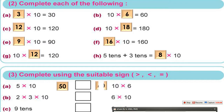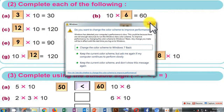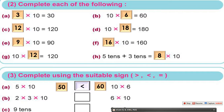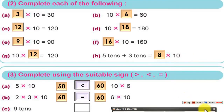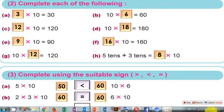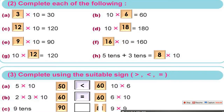10 times 6 equals 60. 10 times 5 equals 50. So 50 is less than 60, because 5 tenths is less than 6 tenths — 5 is less than 6. What about 2 times 3 times 10? 2 times 3 equals 6, and 6 times 10 equals 60. So 60 equals 60. 9 tenths equals 90, but 9 times 9 equals 81. So 90 is greater than 81.